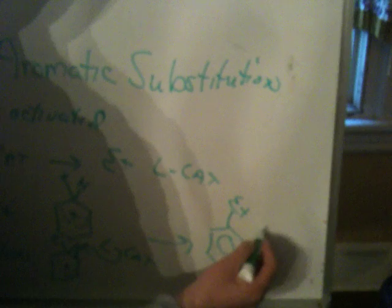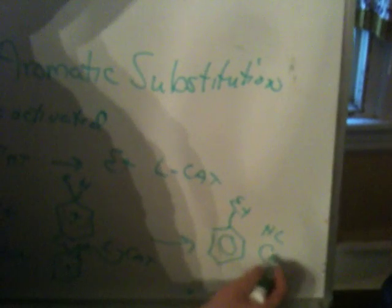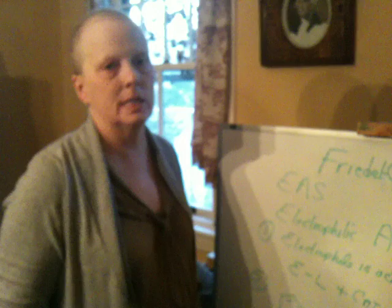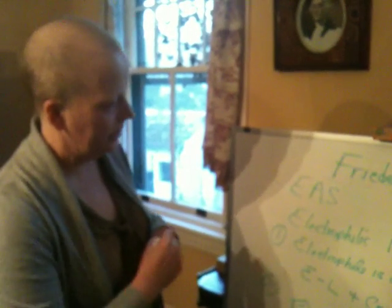So aromatic rings do this peculiar thing in that the electrophile adds to the ring, but then the ring has to lose an atom to become aromatic again because it can't do a simple addition. Simple addition reactions are impossible.